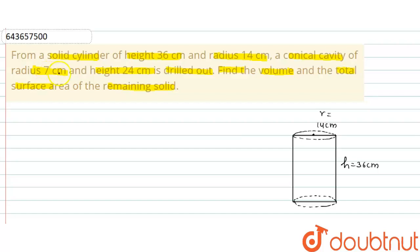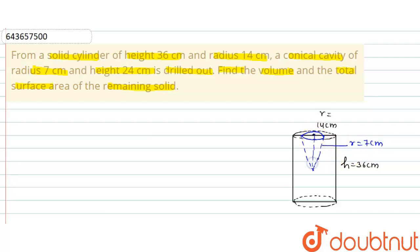A conical cavity whose radius is 7 centimeter and height 24 centimeter is drilled out. So if we drill here, we have a conical shape whose radius is equal to 7 centimeter and height is equal to 24 centimeter.